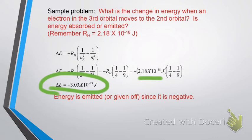Now, if we were going the opposite way, where it's going from the second to the third orbital, then we would have a different sign. It would be a positive 3.03 times 10 to the minus 19 joules.